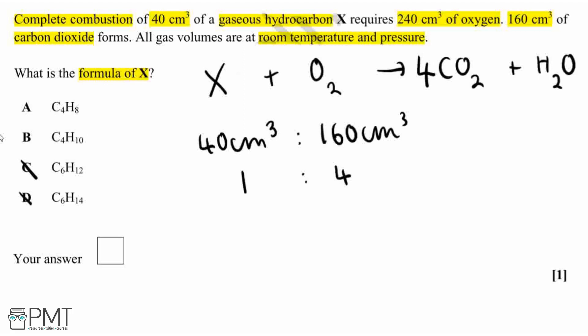So now, let's have a look at the ratio of the hydrocarbon to oxygen. Again, we've got 40cm³ of our hydrocarbon and this requires 240cm³ of our oxygen, and this ratio goes down to a 1 to 6 ratio. So now we can put a big 6 in front of our oxygen.